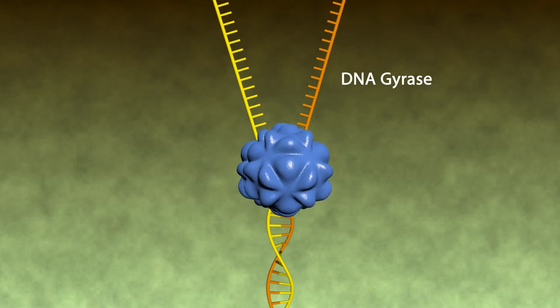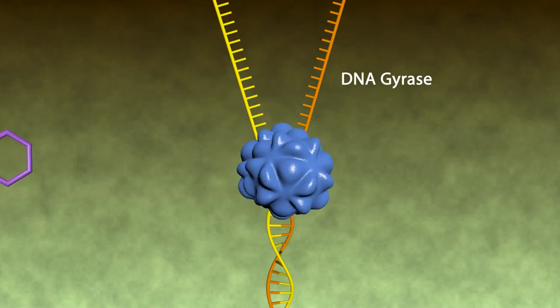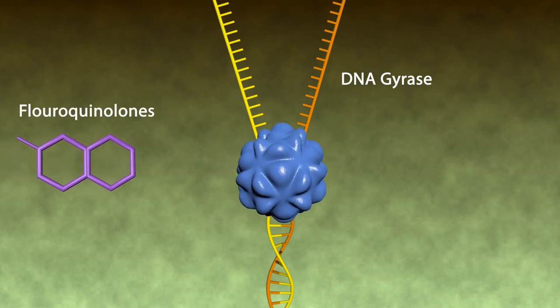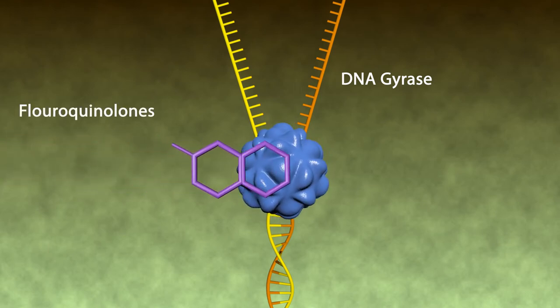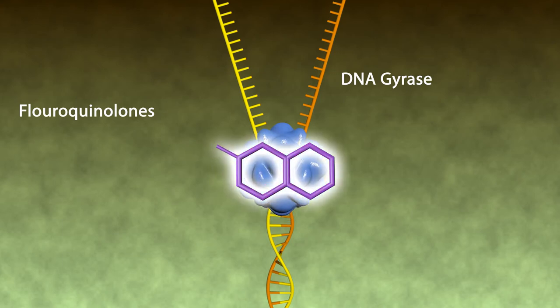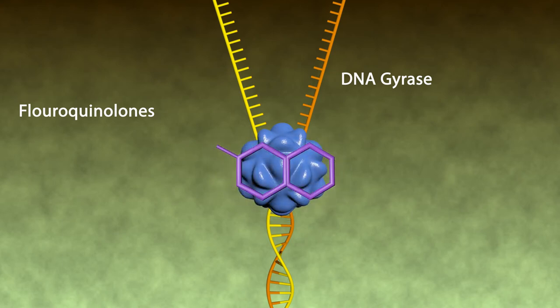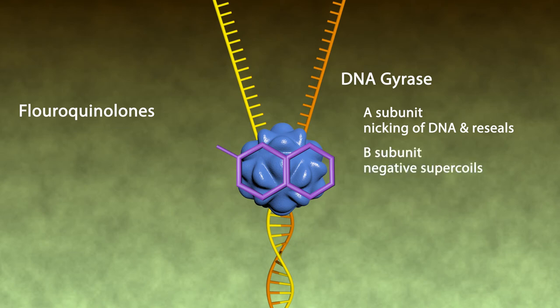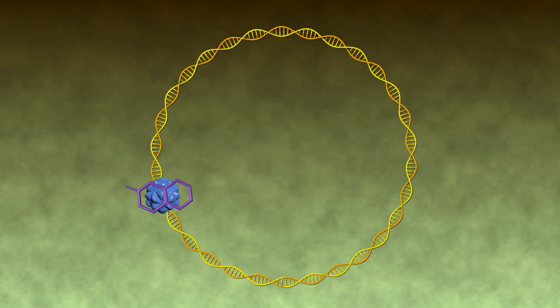Fluoroquinolones inhibit the enzyme bacterial DNA gyrase, mainly gram-negative, which nicks double-stranded DNA, introduces negative supercoils, and then reseals the nicked ends. The DNA gyrase consists of two subunits: the A-subunit, responsible for nicking and resealing of DNA, and the B-subunit, responsible for introducing negative supercoils. Fluoroquinolones bind to the A-subunit and interfere with strand cutting and resealing.